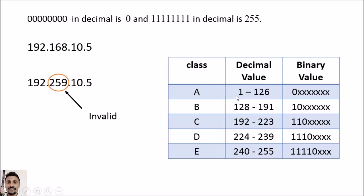For Class A, if the first portion's decimal value is between 1 and 126, or the binary value starts with 0 followed by any combination of ones and zeros, it is Class A. If the decimal value is between 128 and 191, it is Class B.